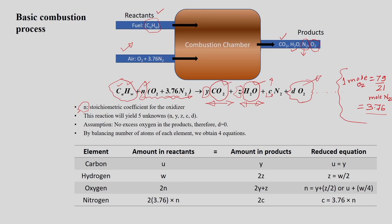The excess oxygen term D will only appear when we consider excess oxidizer or excess air percentage in the air-fuel mixture. If it is stoichiometrically balanced, this term will not be present. If excess air is mentioned, then a certain amount of oxygen will appear in the product gas.